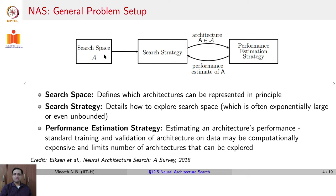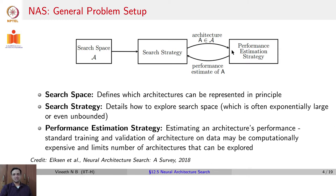So you have a search space and a search strategy, which results in an architecture whose performance is estimated. Based on the performance estimate, the search strategy looks for a newer architecture, and this loop continues until a desired performance is met on a consistent basis.